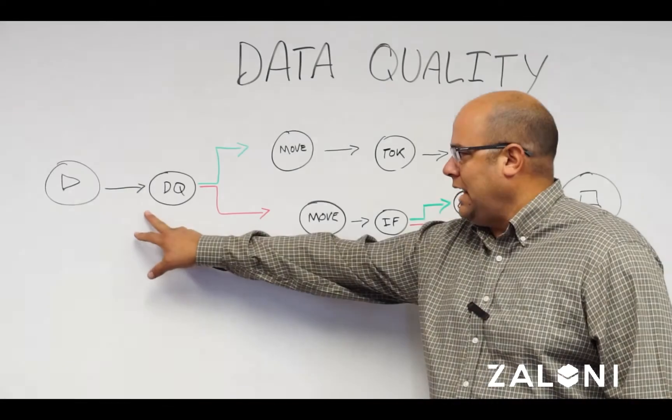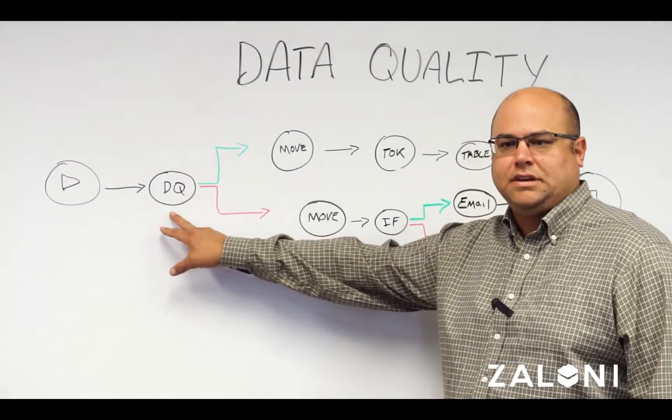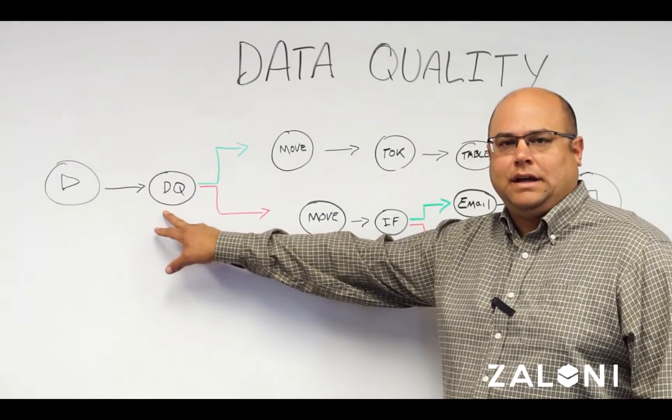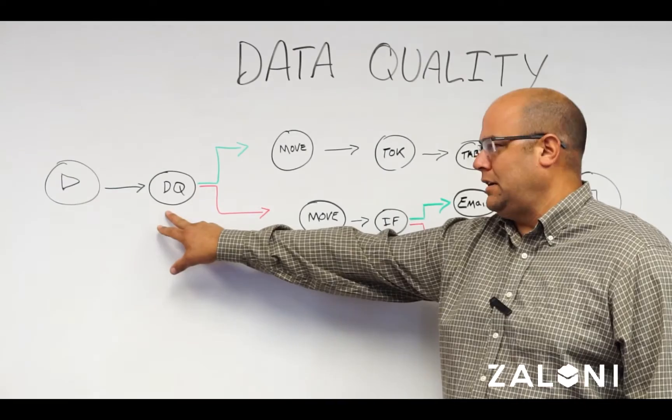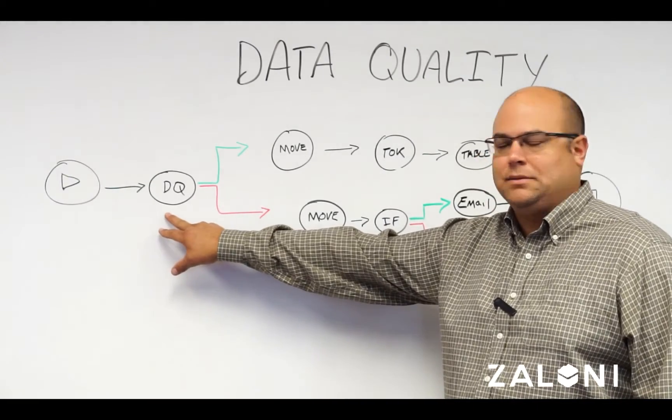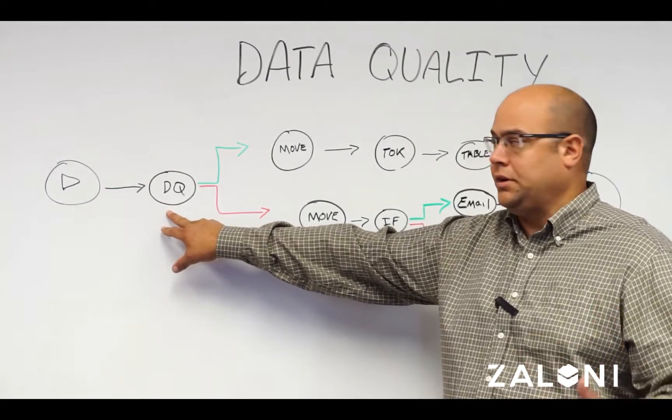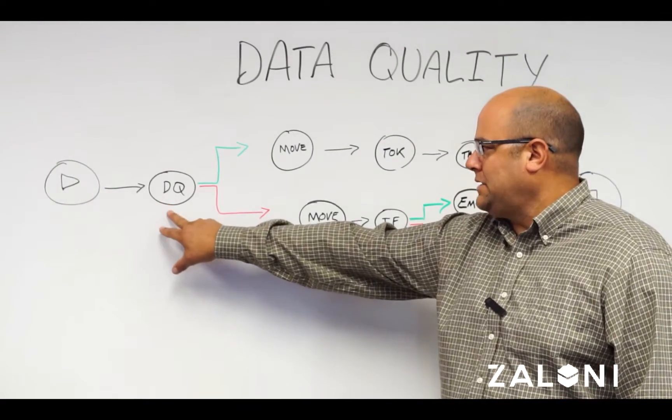We might have an action here or a set of rules that say, make sure we have no null values, make sure the format that data comes in is a social security number, so it matches the social security number pattern. And if it passes these checks,